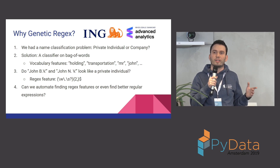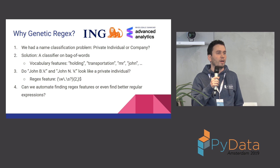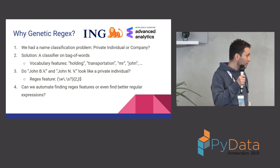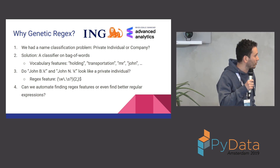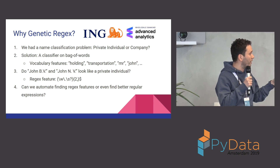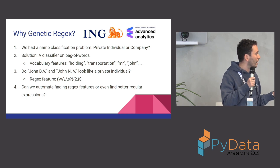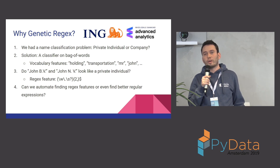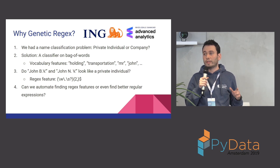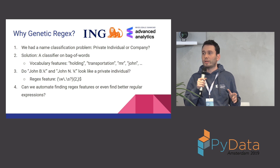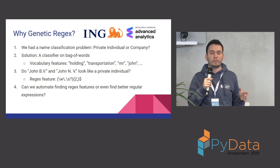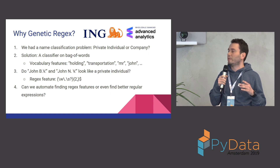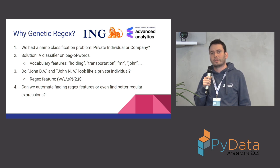Therefore, in order to generalize better, we also have some regex features. In that case we can consider patterns like anything that ends with two letters and dots. Then our question is: can we automate this process? Or maybe can we find even better regular expressions than handcrafted regex features? At that point, Robin joined us for his master thesis.